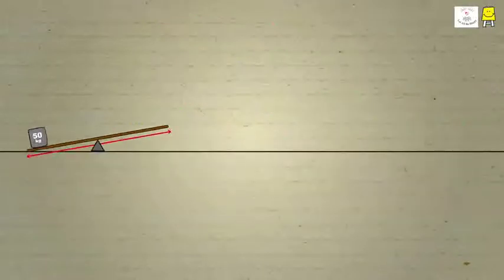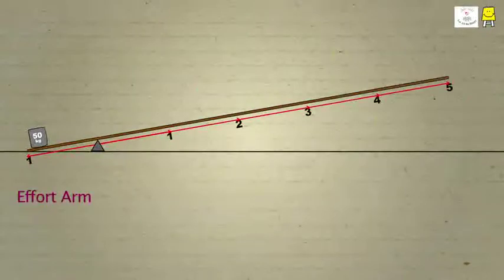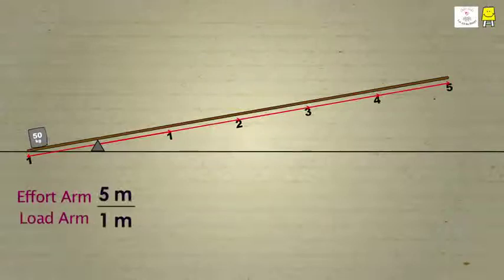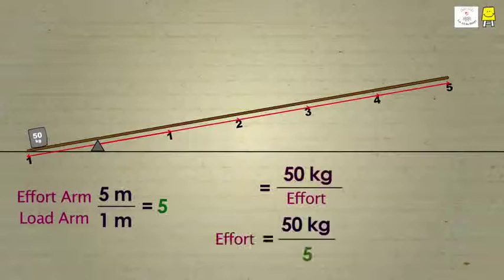What will happen if we increase the length of the effort arm 5 times? That is 5 meters effort arm by 1 meter load arm. Mechanical advantage will be 5, which means that a load of 50 kilograms can be lifted with an effort of 10 kilograms.